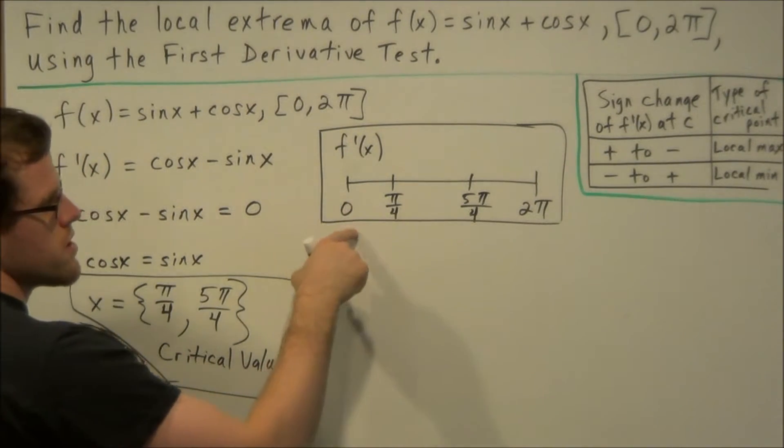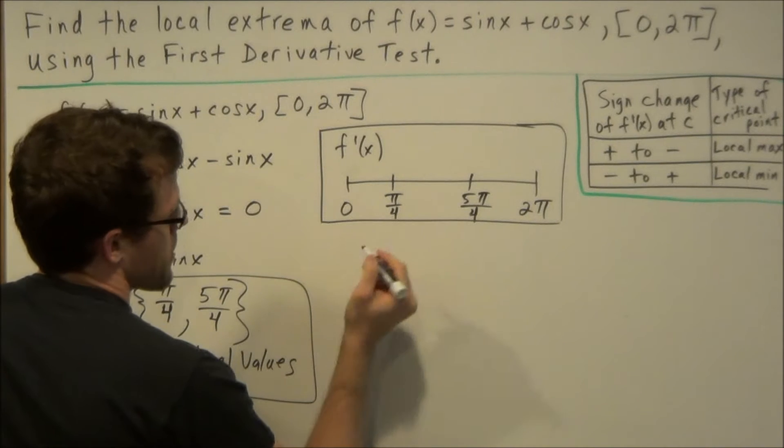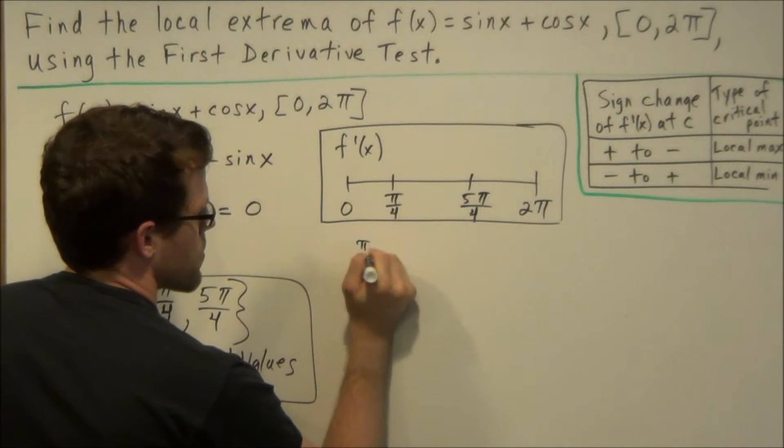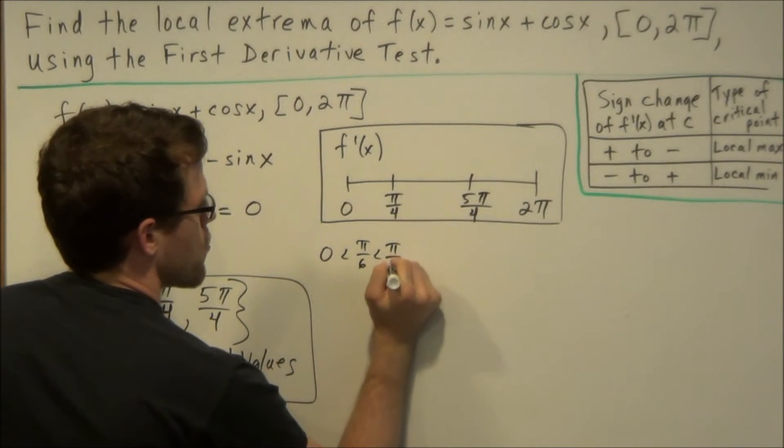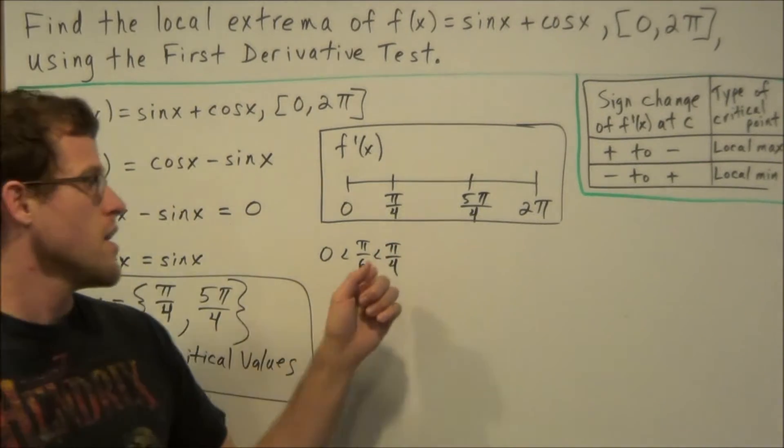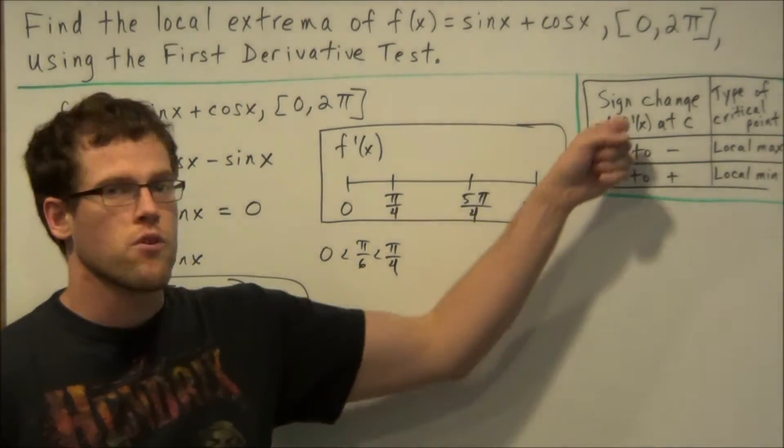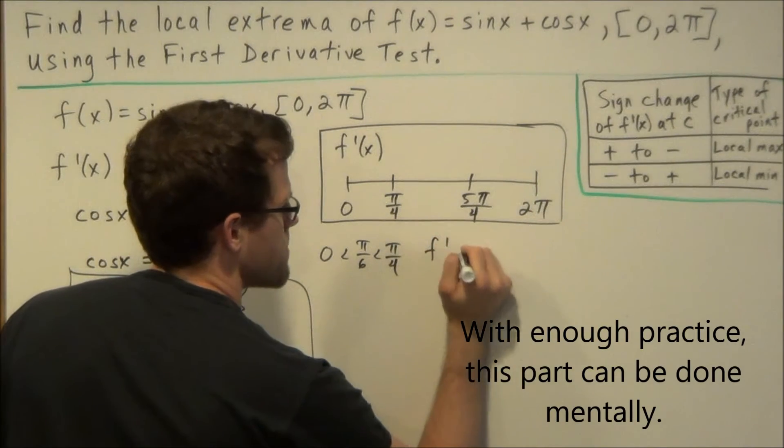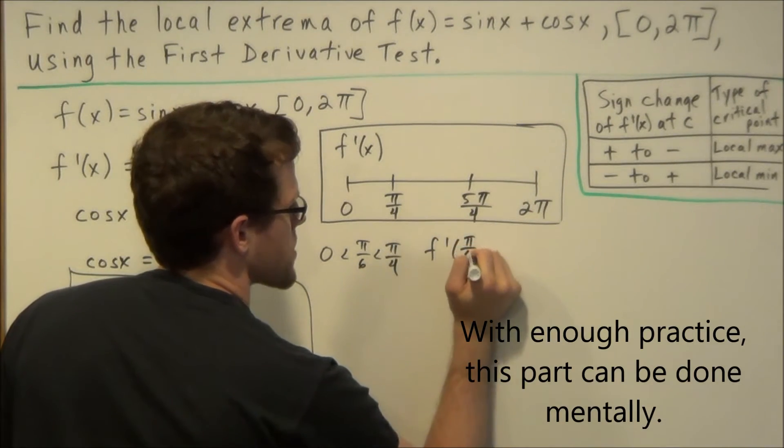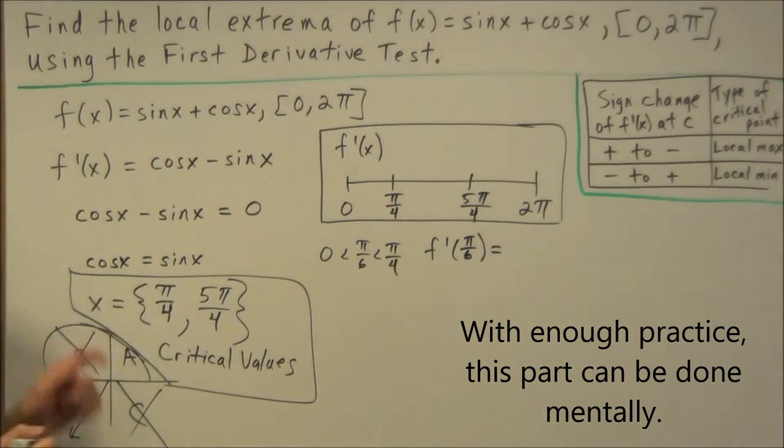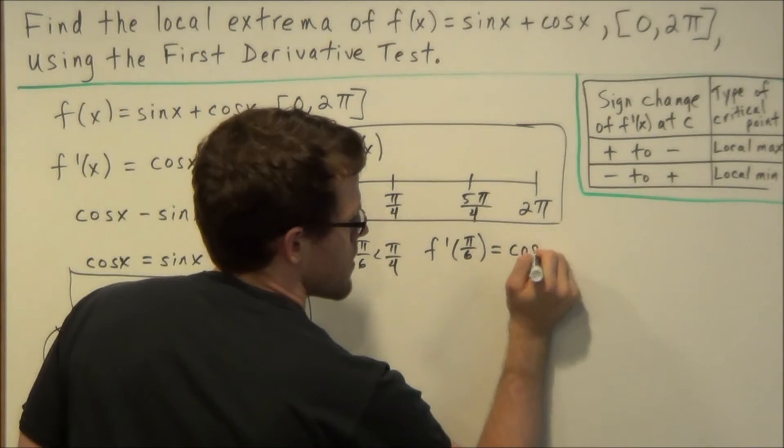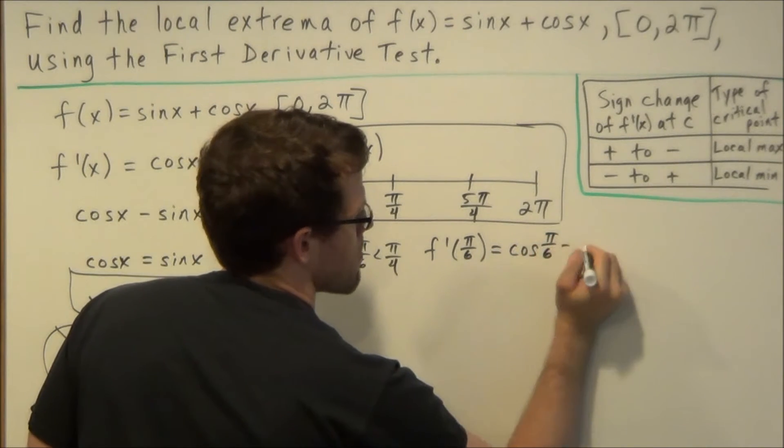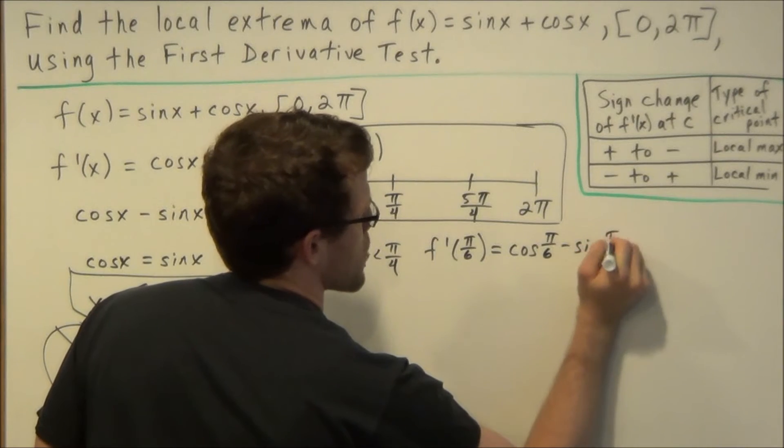So if we look at the first interval, we need to pick a number between 0 and π/4. So we can pick π/6 because π/6 is between 0 and π/4. And what we do is we're going to plug this value into our first derivative. So we're going to find, in this case, f'(π/6). So be careful, don't plug it into the original function. We're going to plug this into our first derivative.